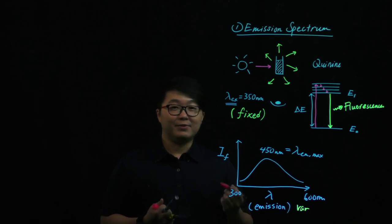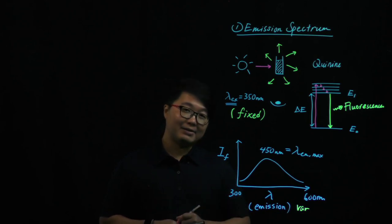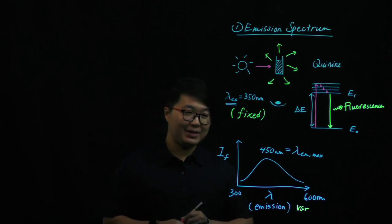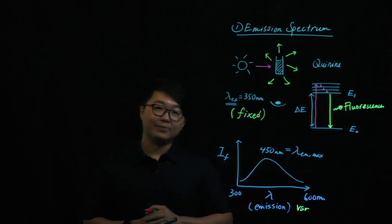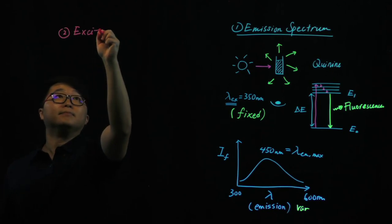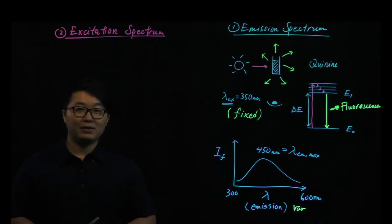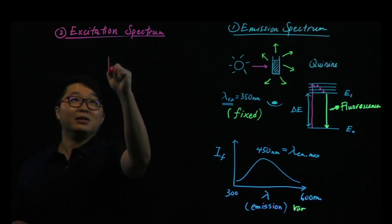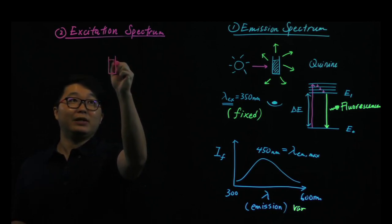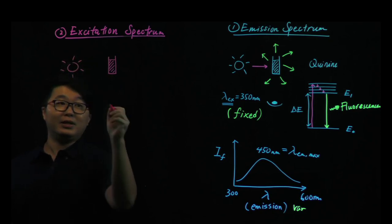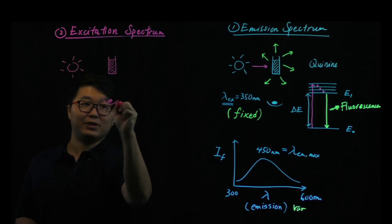After figuring out the emission peak of crinine from the emission spectrum, next we're going to find the excitation wavelength that gives us the highest emission intensity for that particular emission peak. This is the purpose of running an excitation spectrum. The instrumental setup will be the same as for the emission spectrum — we have our sample in a quad cell, an excitation source, and the detector at a right angle to the excitation source.